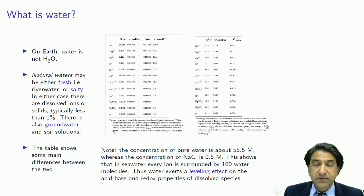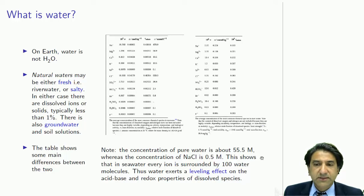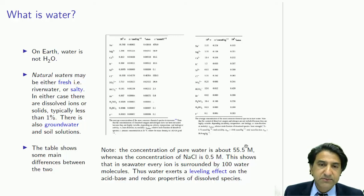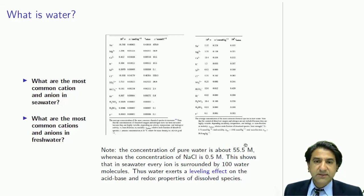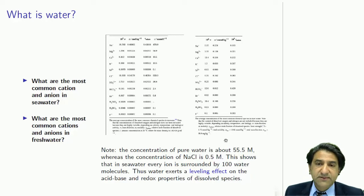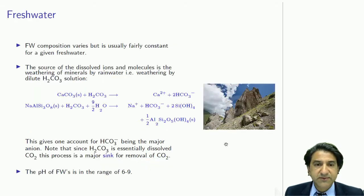Those are the main qualities of the two different types of water. Freshwater tends to be a little bit more variable than seawater because it's influenced by local geological materials in the vicinity. Whereas seawater, being a large quantity, is much more stable — it's been stable for millions of years.